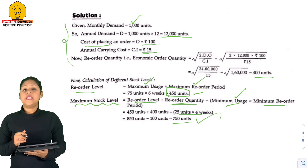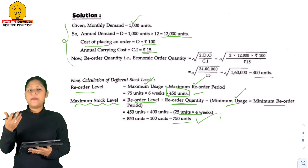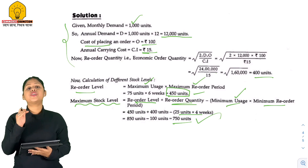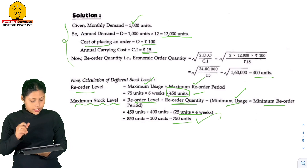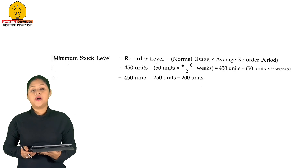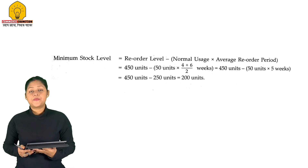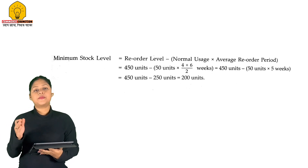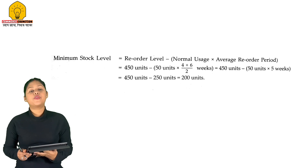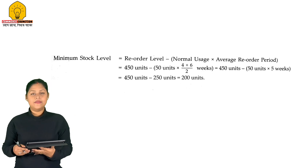What is the Minimum Stock Level? Which level is the minimum below which stock should not fall? Minimum Stock Level equals Reorder Level minus normal usage into average reorder period. The Reorder Level is 450 units minus 250 units, and the Minimum Stock Level is 200 units.